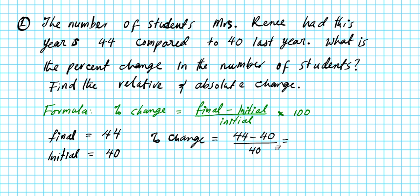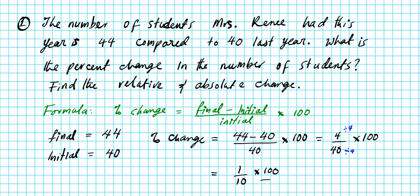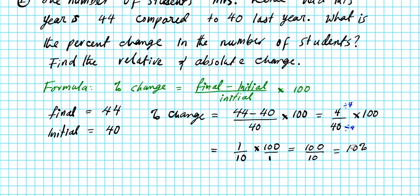Percent change = (44 − 40) / 40 × 100 = 4/40 × 100. We can divide top and bottom by 4, which gives 1/10 × 100. Multiplying across: 100/10 = 10 percent.